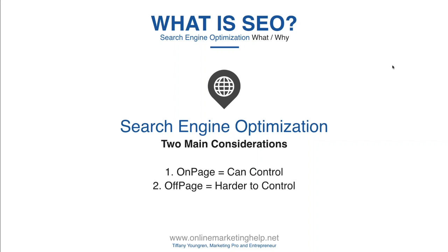Off-page SEO — you can control aspects of it, but in general you can't directly control it. Links to your website are one off-page SEO factor; social media links to your website are another. You can post and do whatever you can to get them shared, but you can't make people share them. It comes down to skill, using best practices, and then testing, adapting, and changing things according to what your testing shows you.